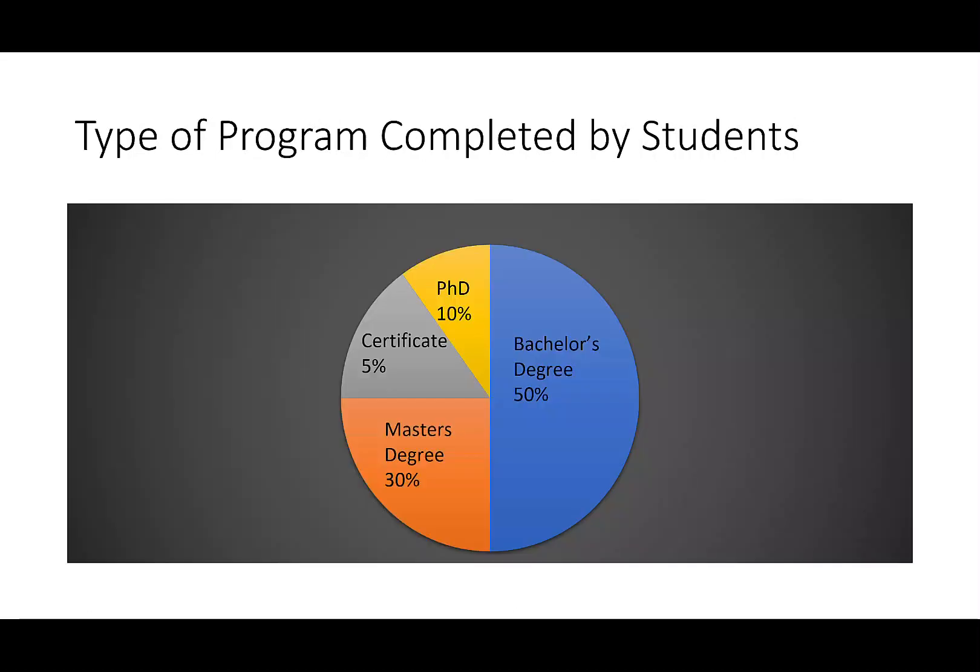This graph gives the type of program completed by students. It says 50% bachelor degree, 30% master's degree, 5% certificate, and 10% PhD.